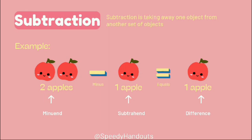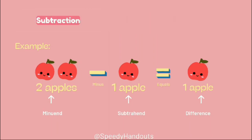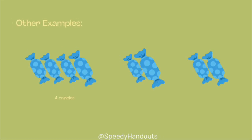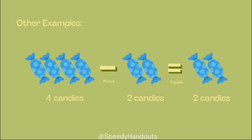Now subtraction. 2 apples minus 1 apple equals to 1 apple. Other example, 4 candies minus 2 candies equals to 2 candies.